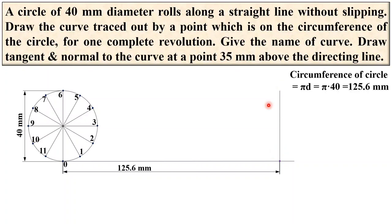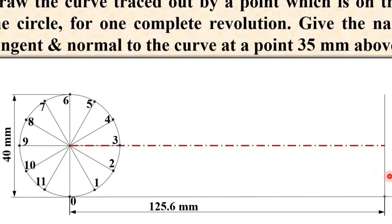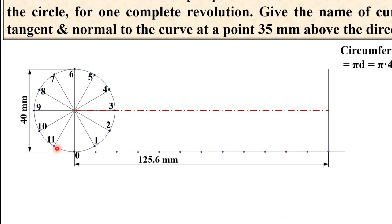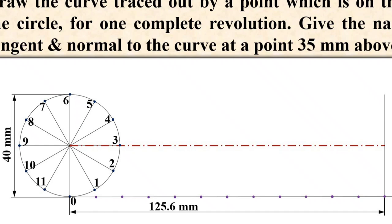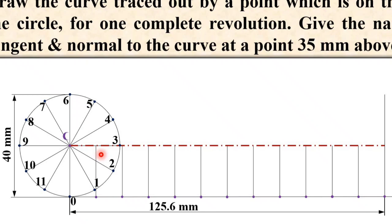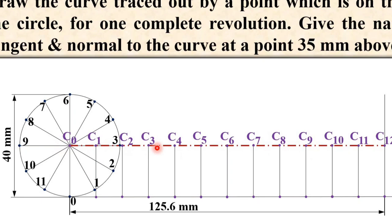Draw the center line up to here. Now divide this distance of 125.6 mm into 12 equal parts. It is a little bit difficult to divide 125.6 mm into 12 equal parts with a scale, so you can draw one inclined line of 120 mm length to divide it. Refer to my earlier video if needed. Draw vertical lines from all these points up to the center line to get intersection points. Give the names C0, C1, C2, C3, C4 up to C12.